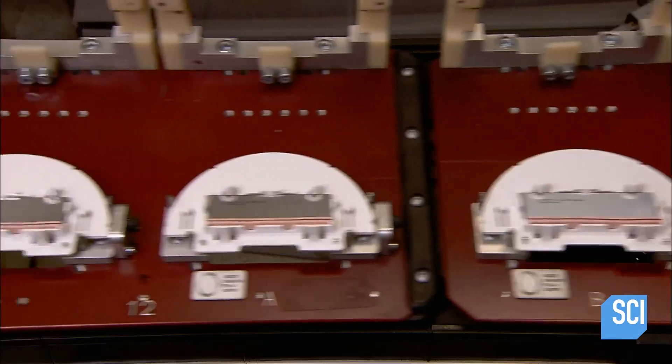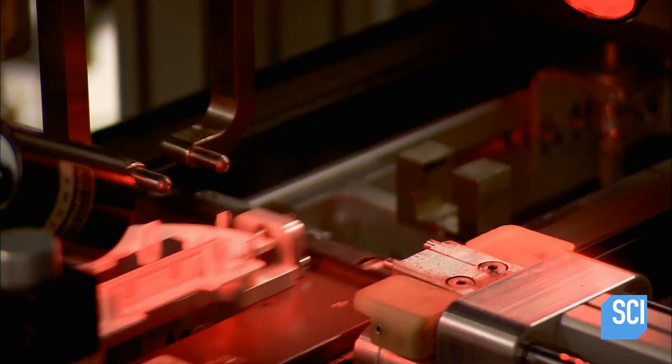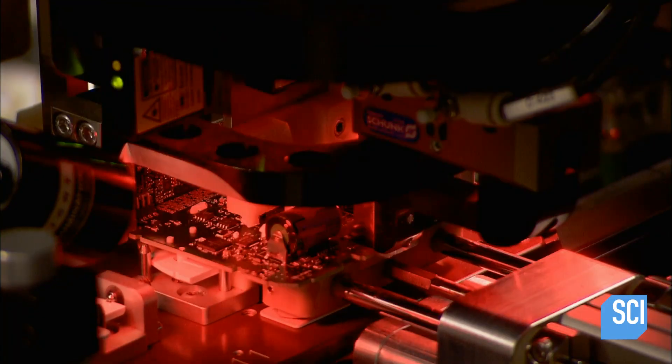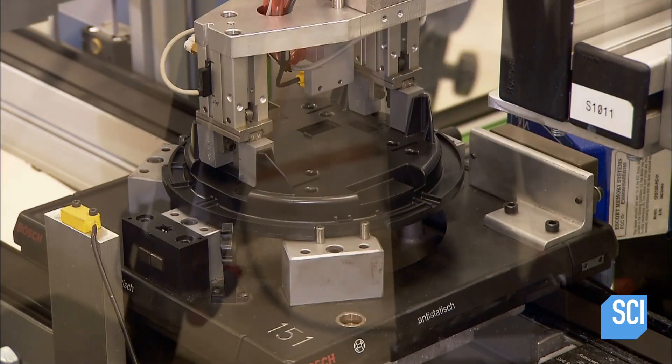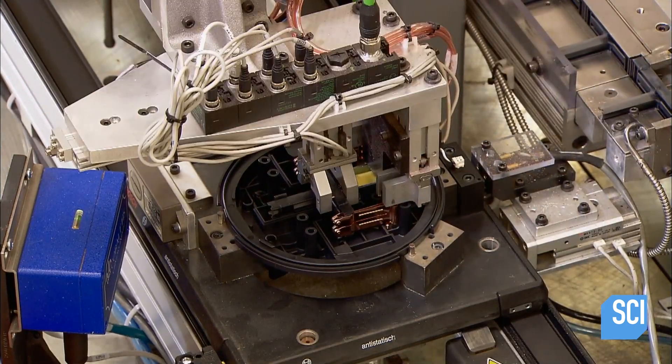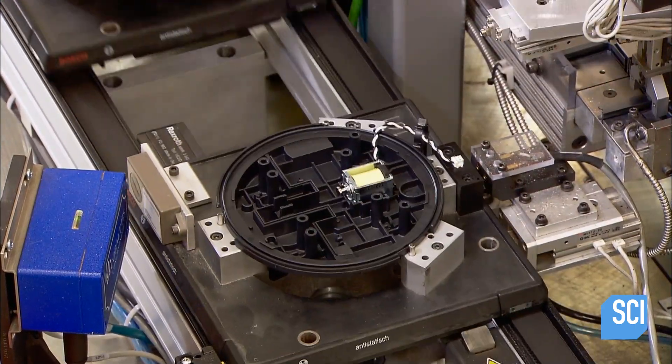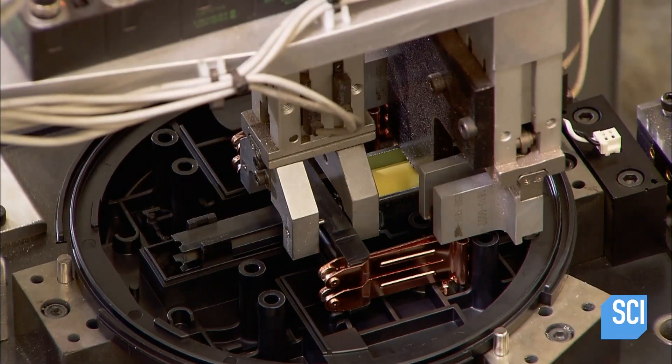Assembling the meter body begins with a plastic base plate. The first station prints a serial number on the bottom. The next station then flips the base plate upright and installs the components of the remote disconnect switch. This switch enables the electric company to switch power on and off from any location.